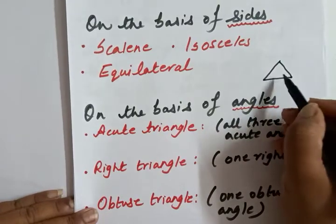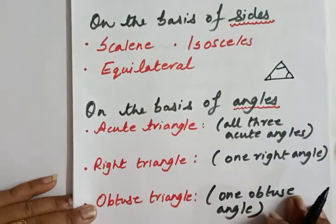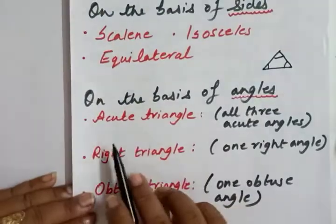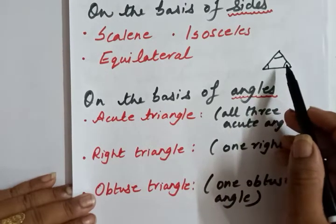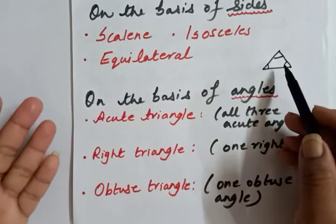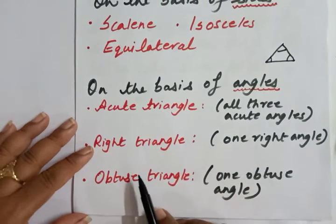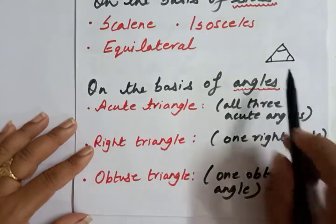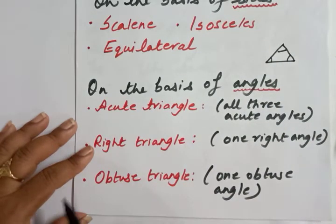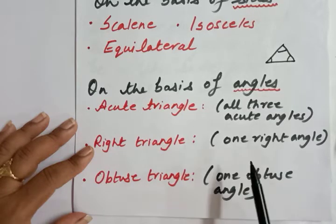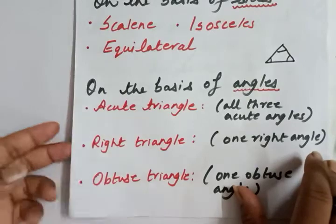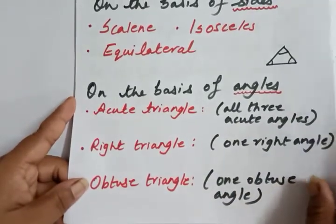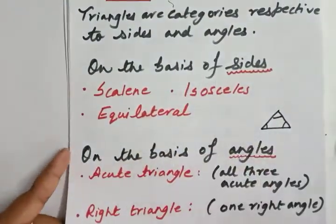Now on the basis of angles, how can we categorize a triangle? First, the acute triangle - when all three angles are acute, meaning less than 90 degrees. Next, the right triangle - when one among the three angles is a right angle equal to 90 degrees. Then the obtuse triangle - when one among the three angles is an obtuse angle, which is greater than 90 degrees. So the categorization of triangles with respect to sides and angles should now be very clear.